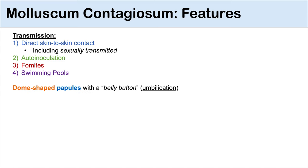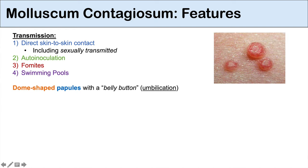When someone becomes infected and goes through the incubation period, they can eventually develop dome-shaped papules that have a characteristic belly button, or umbilication. If you take a close look at these papules, you would see a central indent — the belly button of the papule. This is how we can distinguish molluscum contagiosum from other vesicular skin lesions. Generally, the papules are very small, two to five millimeters in diameter.